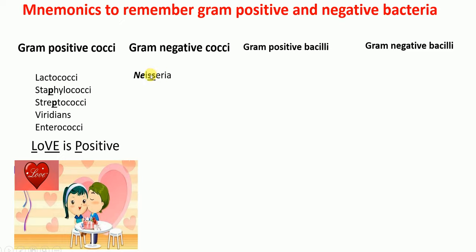So why is Neisseria gram-negative? Because it has 'N-E' in its name, which stands for negative. And the double S in Neisseria corresponds to the double C of cocci. So Neisseria is a gram-negative cocci. Now we're done with cocci — let's move on to bacilli.